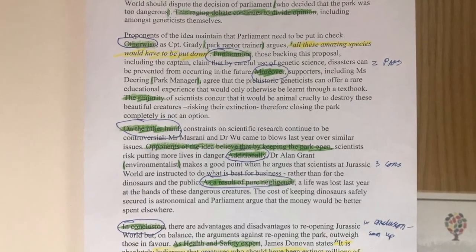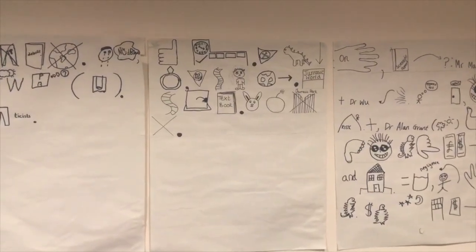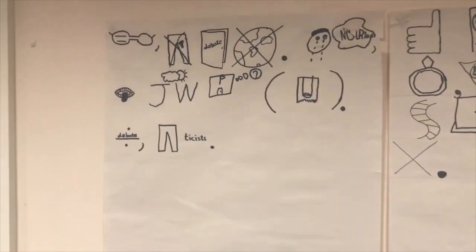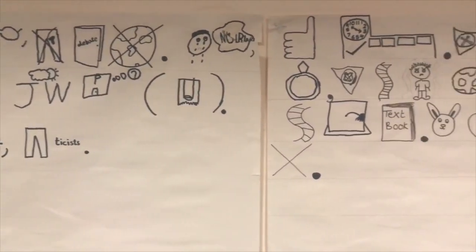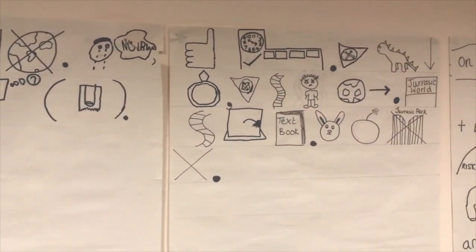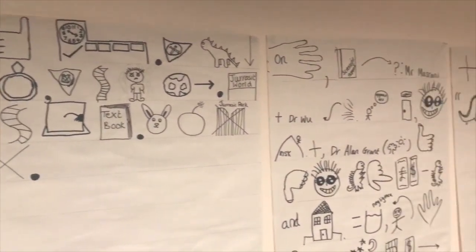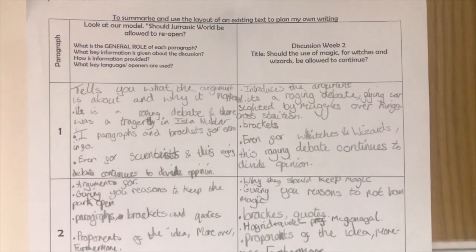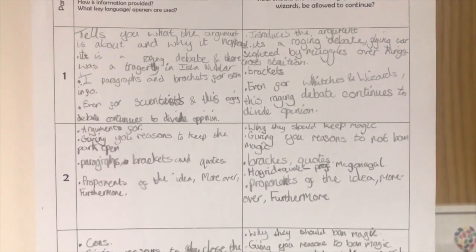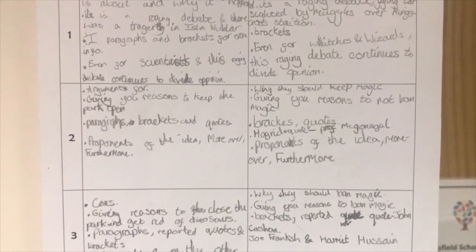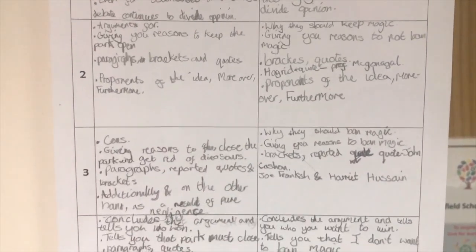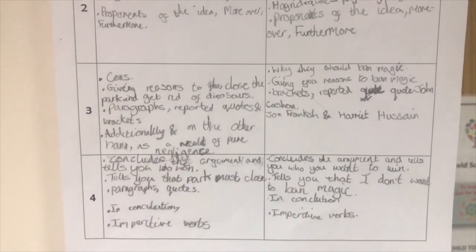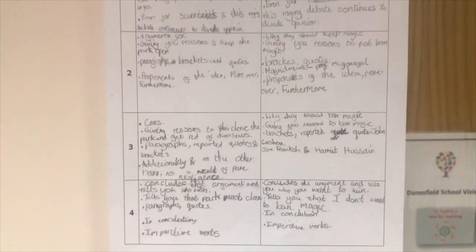Once we had finished our quest stories, we then moved on to discussion texts. In order to teach the children the structure of a discussion text, we introduced them to high quality models to learn the structure and language of this text type. They used a Talk for Writing text map including actions. After the children had learned the text, we used a boxing upgrade to show what needed to be included in every paragraph. They then applied this understanding to their own discussion text with the title: 'Should magic be allowed to continue for witches and wizards?'